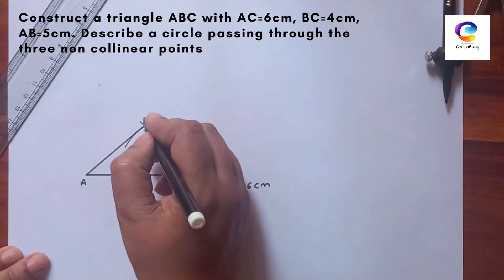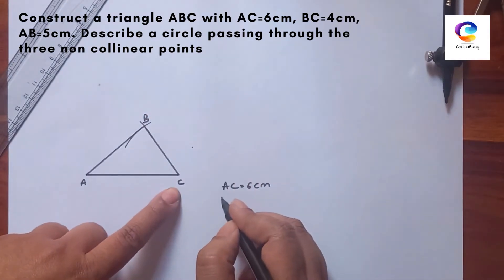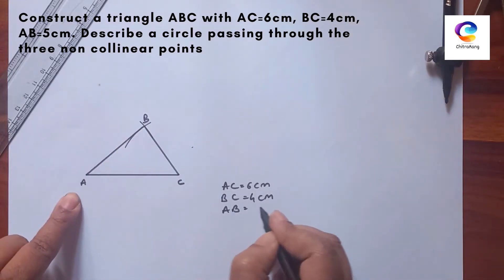Give the name here B. So BC is equal to 4 cm, and AB is equal to 5 cm.